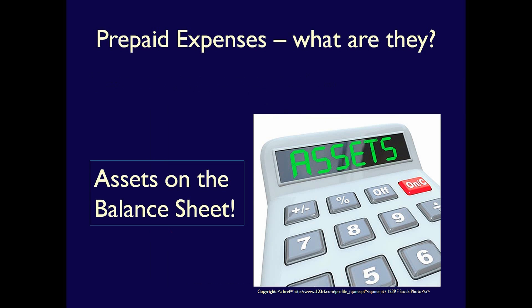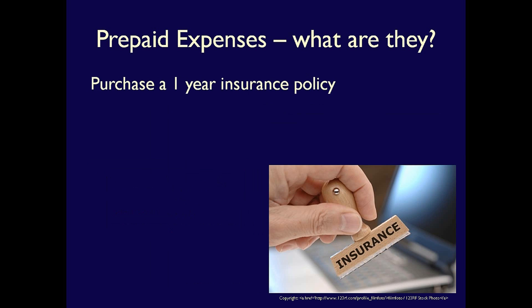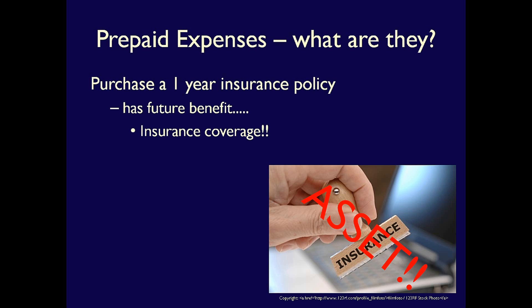Why? Well, say you purchase a one-year insurance policy for $12,000 cash. Your cash goes down, so your assets go down. But the insurance policy has future benefit for the company because they now have insurance coverage for a year. If anything has future benefit, it's got to be recorded as an asset.